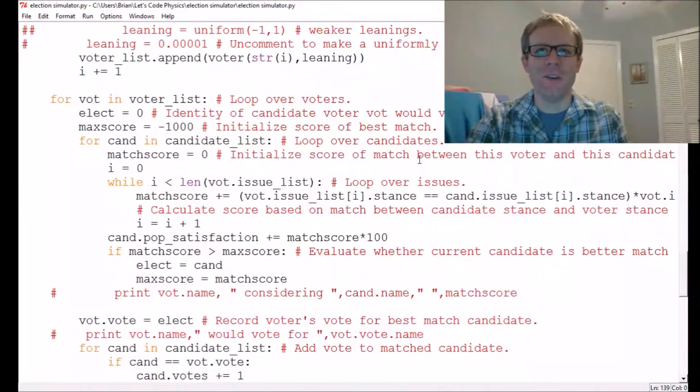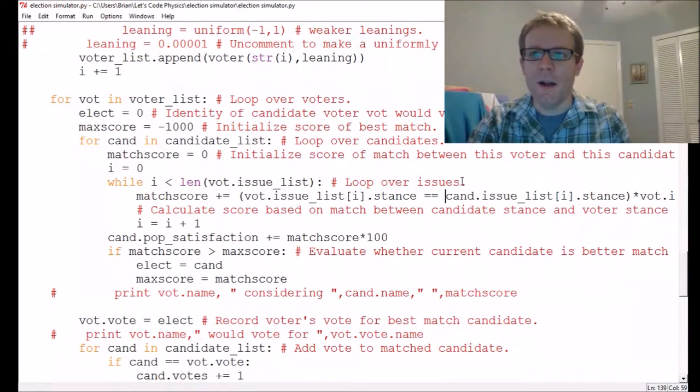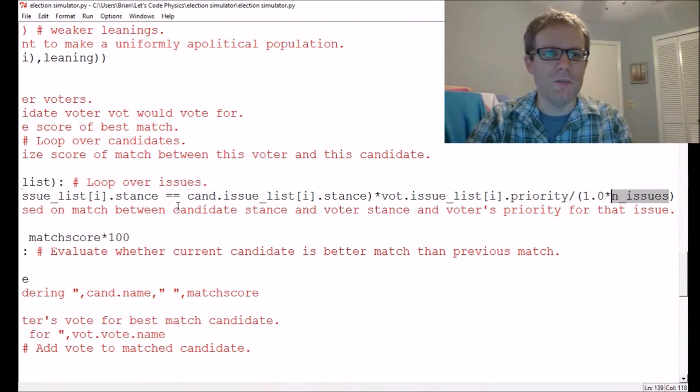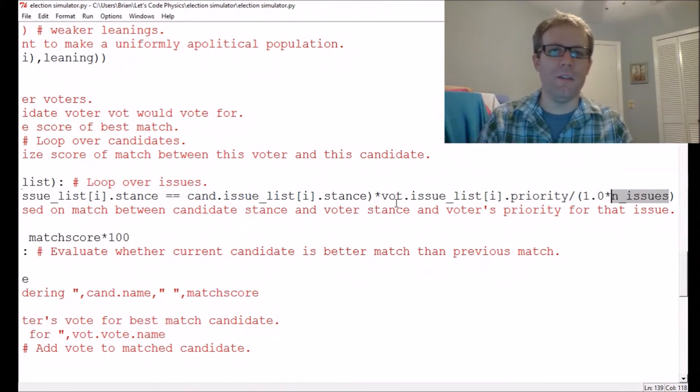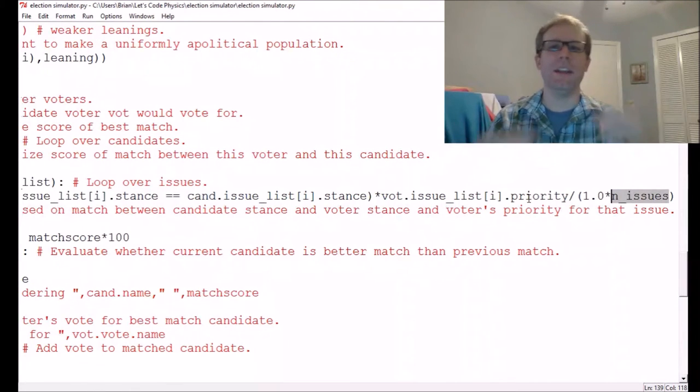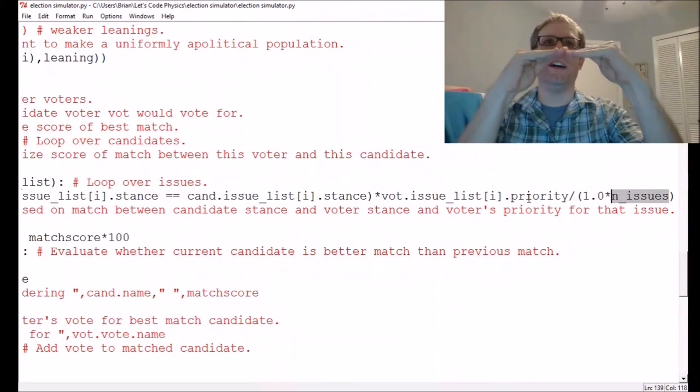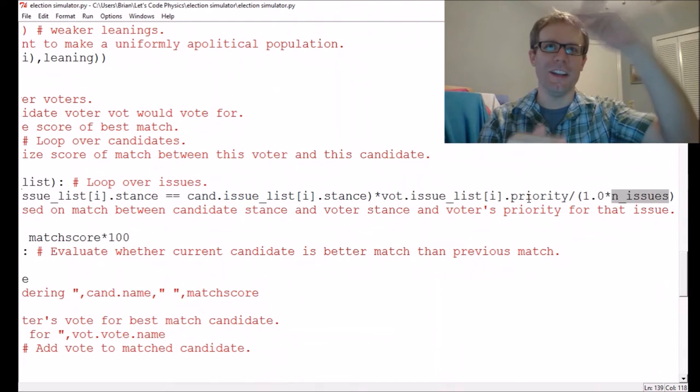It's me again. So after recording and editing and even uploading the first part of this video, I discovered that I had a mistake, but that's okay because science is not about not making mistakes. It's about working in such a way that you can find your mistakes and fix them. Here in the match score calculation, you know, the most important line of the code, I should be dividing it not by the number of issues but by the total amount of priority that this candidate has generated.